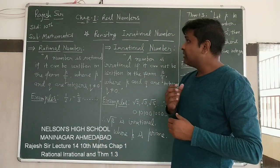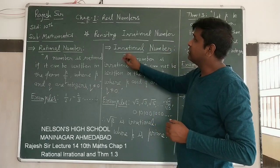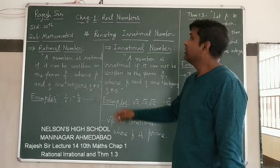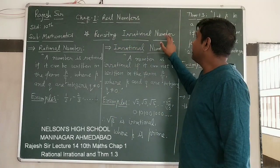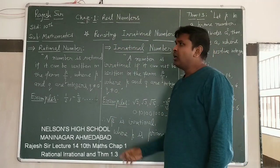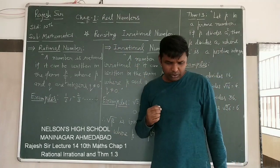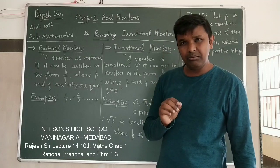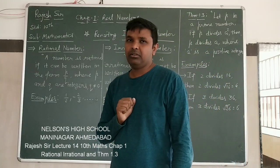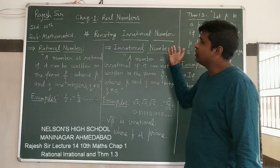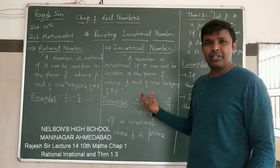Now the next in this chapter we have, after section 1.2 you will see in the textbook it is Revisiting Irrational Numbers. Revisiting, why it is so called, because in 9th standard also you have some idea about rational numbers and irrational numbers. Here we are again visiting the irrational numbers, so we just recall the definition and some examples.